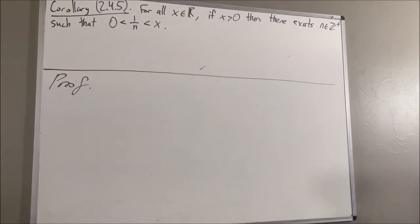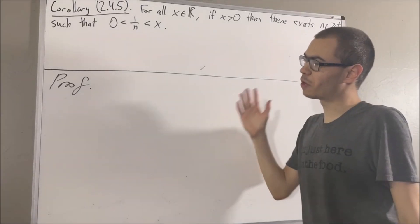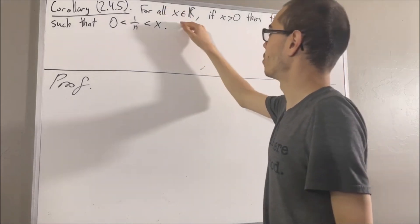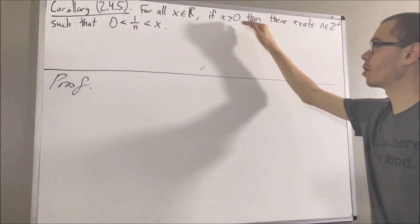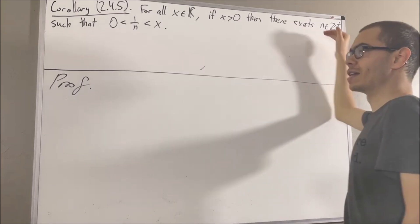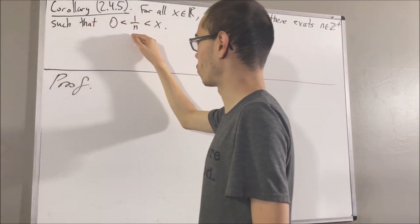Hello! In this video we are going to prove the following corollary. For all real numbers x, if x is greater than zero, then there exists a positive integer n such that zero is less than one over n is less than x.